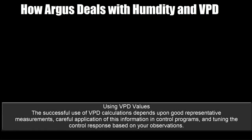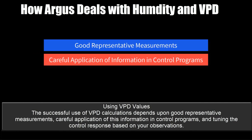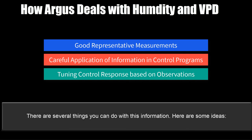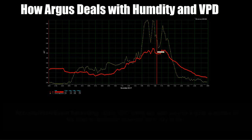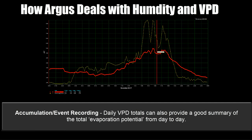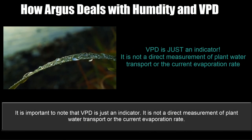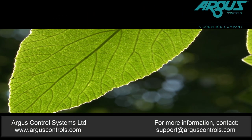Using VPD values. The successful use of VPD calculations depends on good representative measurements, careful application of this information in control programs, and tuning the control response based on your observations. You can record and view VPD values in the Argus graph. Daily VPD totals can also provide a good summary of the total evaporation potential from day to day. You can also establish high and low management alarm thresholds to warn you whenever the VPD is beyond the limits you set. It's important to note that VPD is just an indicator — it is not a direct measurement of plant water transport or the current evaporation rate. For more information, see the Argus VPD application note or contact Argus support.